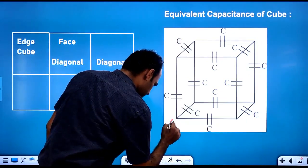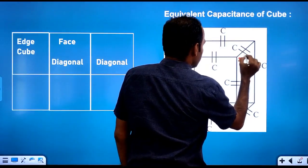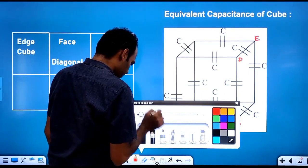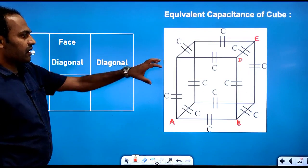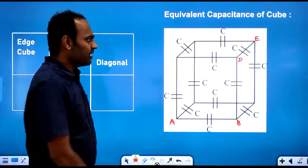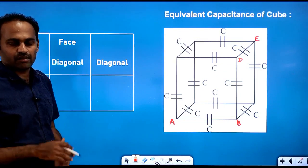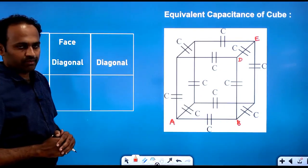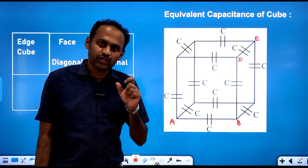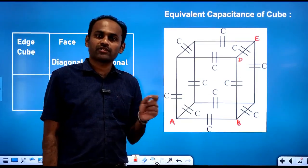I will call this point as A, this one as B, this point as D, and this point as E. Totally there are 12 capacitors in the cube — 4 on the top, 4 on the middle, 4 on the base. So total 4 + 4 + 4 = 12 capacitors. They will ask you: what is the effective capacitance across the edge, across the face diagonal, or across the diagonal of the cube?